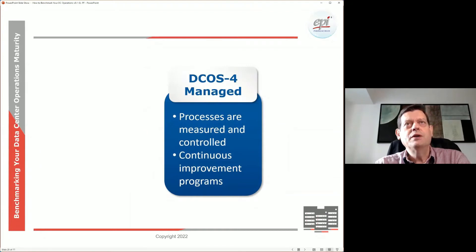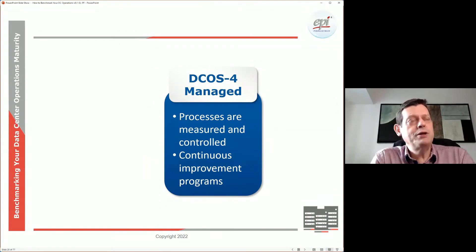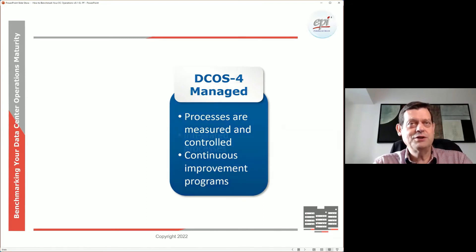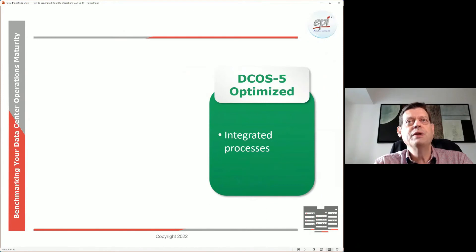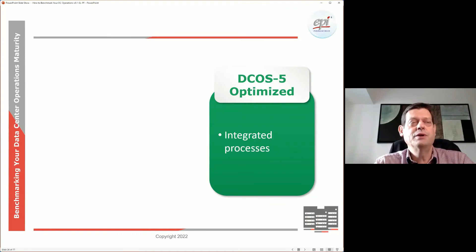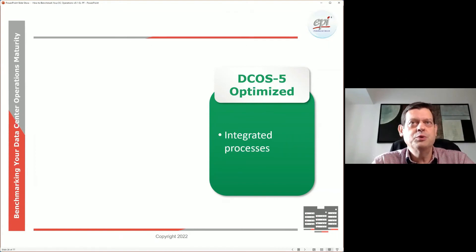Then we go to level four. We have all those processes, we're executing them very well, we measure them in terms of output and control, and we look at how we can improve them over time — continuously. Ideally, like the airplane pictures, we'd like all the individual processes around our data center and IT operations to be well integrated, so we truly work as a well-oiled machine. That is what we as a CEO would like to see — all departments working flawlessly together and communicating well.